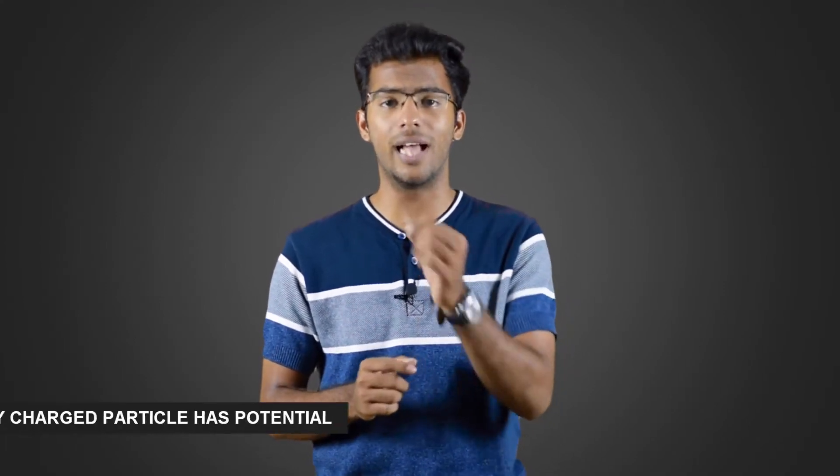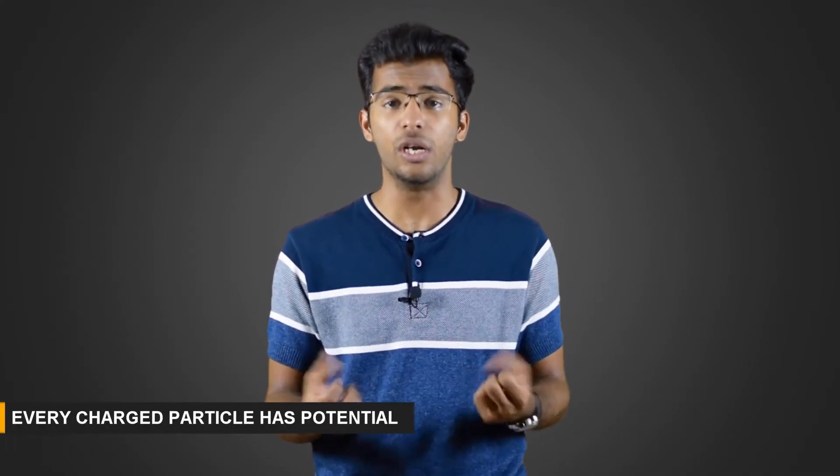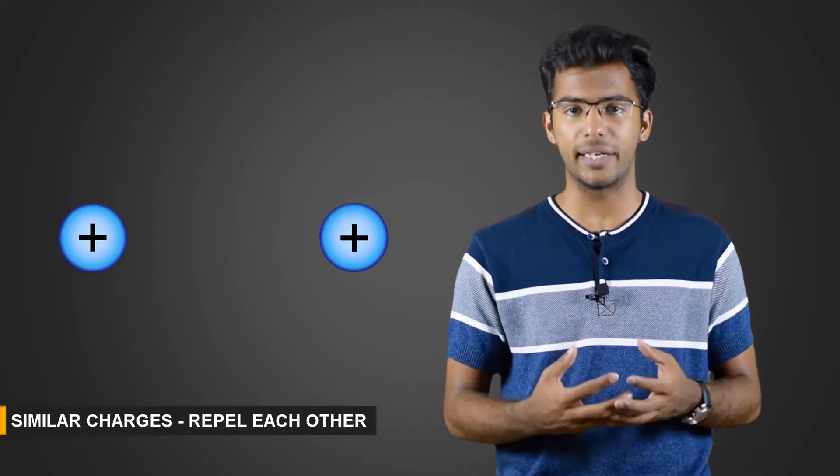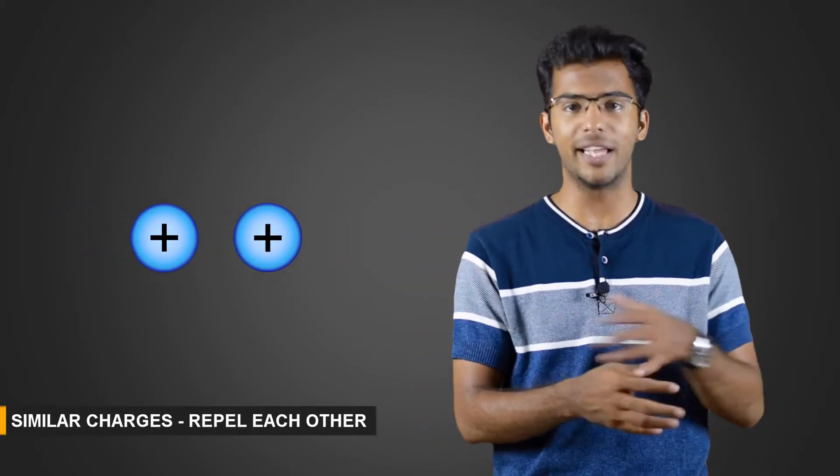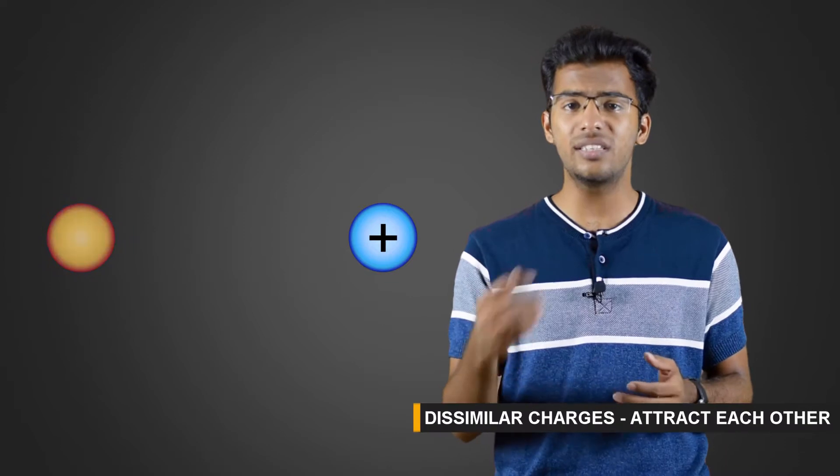Similarly, in electrical circuits, every charged particle has a potential—a potential to do work. This is known as electric potential. When similar charged particles are brought near, they repel each other, and dissimilar charges attract each other.